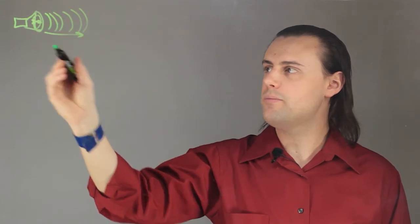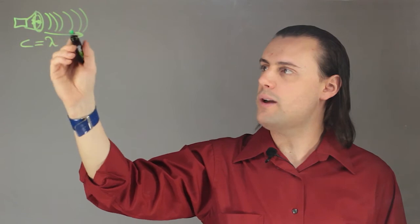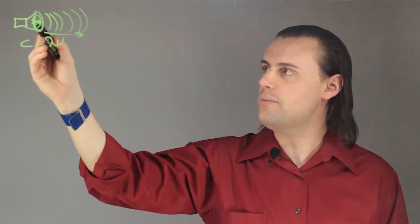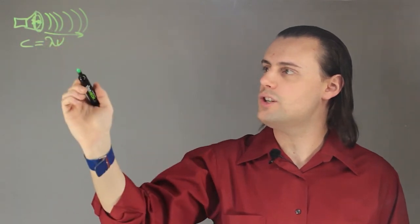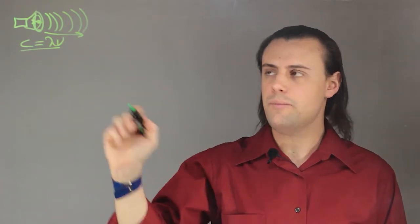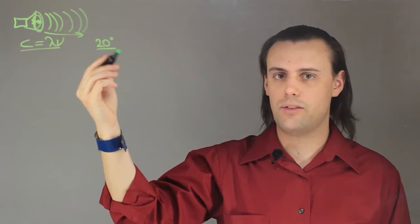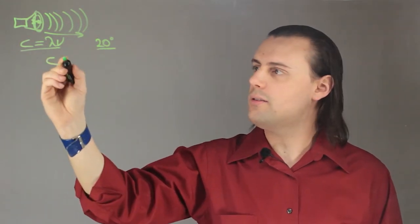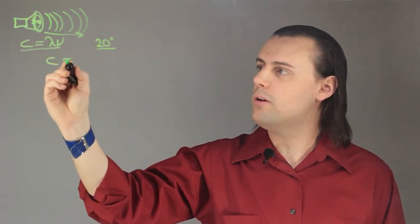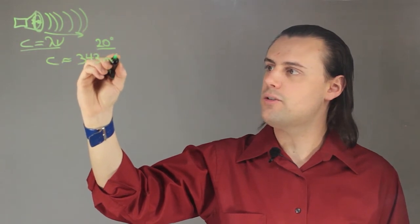This wave of sound propagating in this direction can be described as C is equal to the wavelength times the frequency of this vibration. In a given medium, say air, at a temperature of approximately 20 degrees, if the air is dry, the speed of sound will approximately be equal to 343 meters per second.